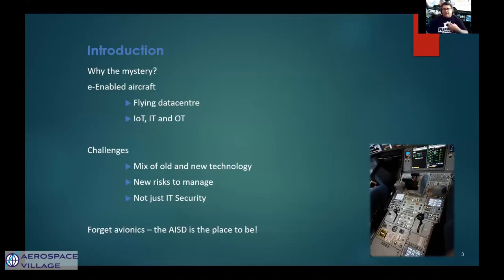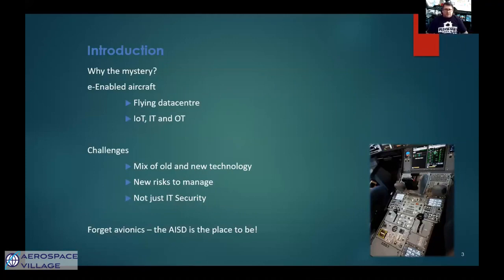For me, instead, the aircraft information systems domain has multiple touch points ranging from the airline network, Wi-Fi, and even the internet and the cabin. These attack scenarios are much more traditional and realistic for a hacker. Okay, it's not sexy — you can't control the aircraft control surfaces from the AISD. But you can have other effects on the aircraft, effects which may impact operations. And if you know what you were doing, you could modify some of the data presented to the pilots.